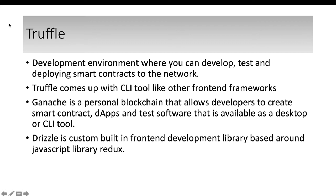Ganache CLI is a testnet that has both a desktop version and a command-line tool. You can install it from npm, and when you run Ganache CLI it will create 10 user accounts each with a default 100 ethers, so whenever you want to do a transaction you can select any one of those accounts. Ganache is for the development environment — in real environments you create multiple nodes and deploy contracts there.